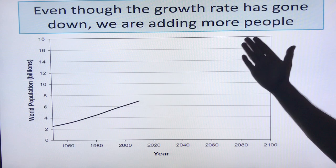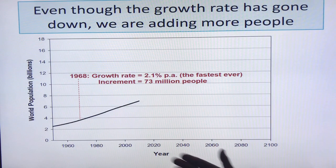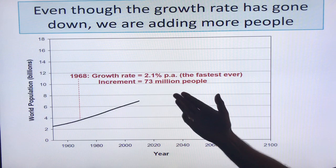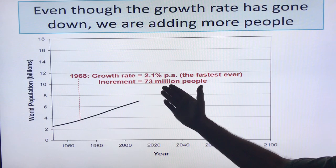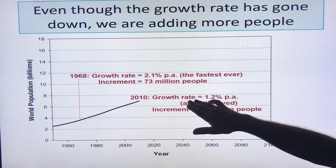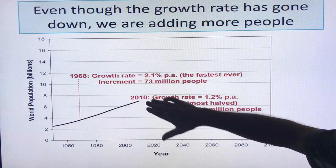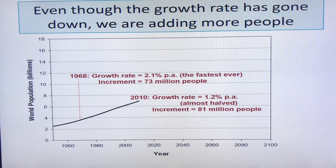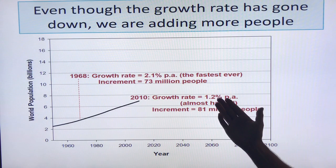Even though the growth rate has gone down, we're still adding more people — how is that possible? In 1968, the growth rate was 2.1% per annum — the fastest ever — and the increment was about 73 million people. By 2010, the growth rate was about half at 1.2% per annum, but the total number is much higher, so the increment is 81 million people, which is actually higher. As long as you have a positive annual growth rate, you have exponential growth. I'm going to continue this discussion in a second video — thank you for listening.